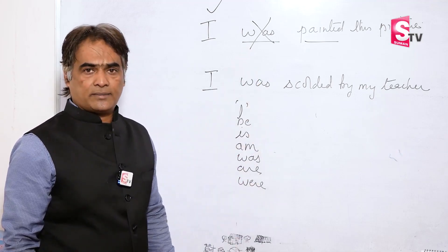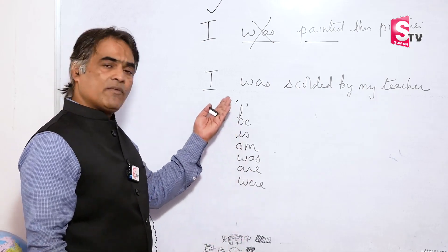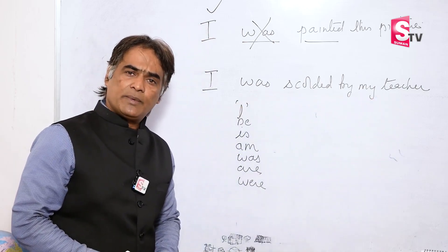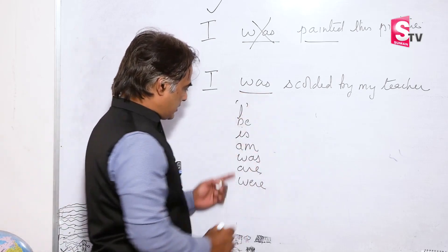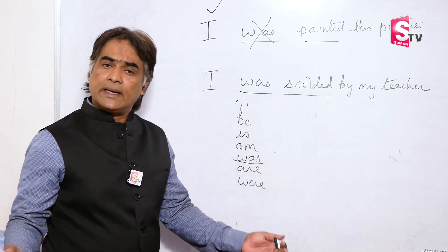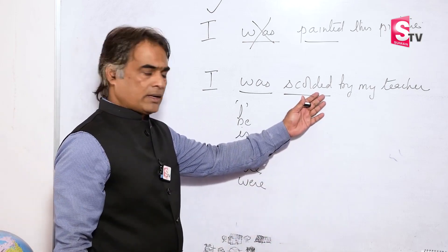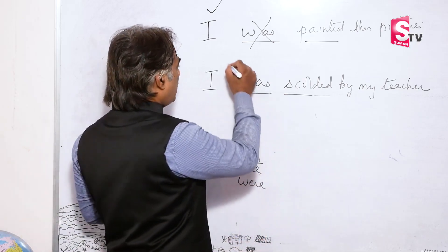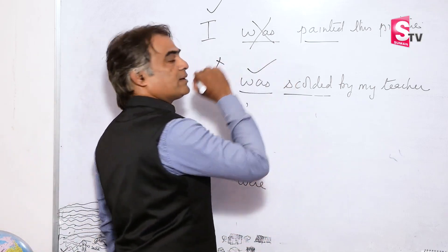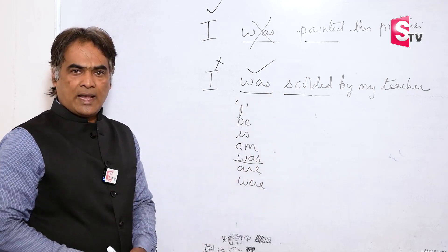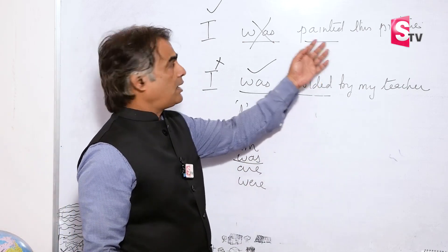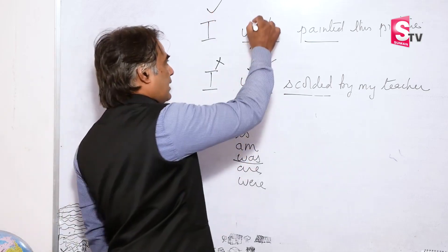Then where is the B form of verb required? Take the next example: 'I was scolded by the teacher.' The B form of verb is 'was,' and the other verb is 'scolded.' Who scolded? Was the scolding done by I? No. When the scolding is not done by I, the B form is required. Going back to the previous example — painting was done by I, so B form is not required.